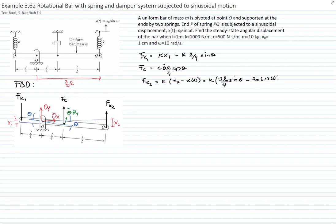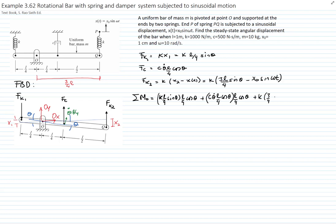Taking moments about point O, all forces produce a moment except the reaction forces at the pivot. The first spring force produces a moment with moment arm L/4 cosine of theta. The damper force produces a moment with arm L/4 cosine of theta. The second spring force produces a moment with arm 3L/4 cosine of theta.